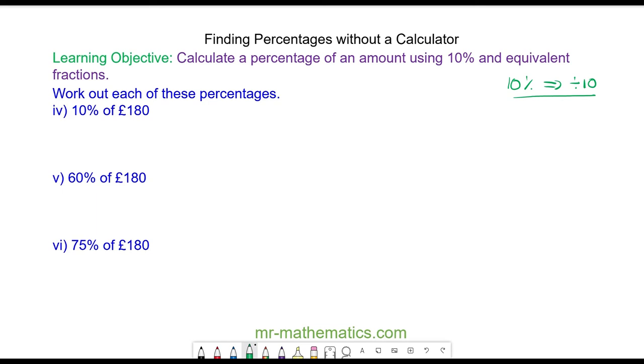Okay, the question is 10% of £180. Well, we know 10% is a division of 10, so we've got £180 divided by 10, which is equal to £18. So this is equal to £18.